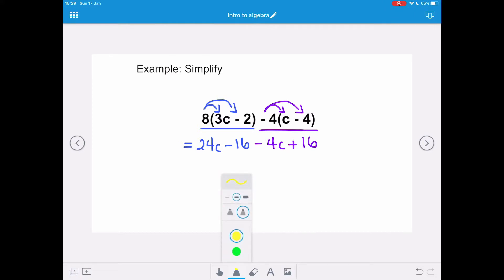Now we need to collect our like terms. We've got c terms, so 24c take away 4c, and we've got negative 16 plus 16 as our constant terms. So 24c take away 4c is 20c, and minus 16 plus 16 is 0, and so we don't need to include that, so our simplified answer is 20c.